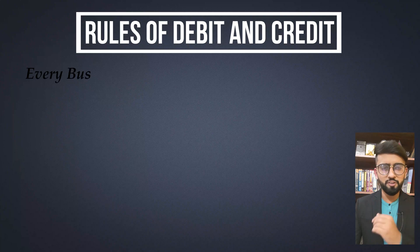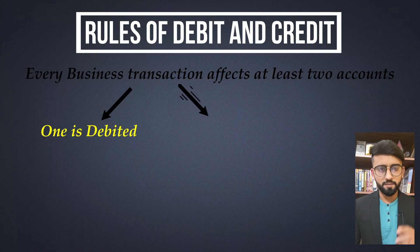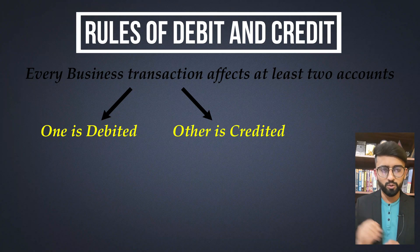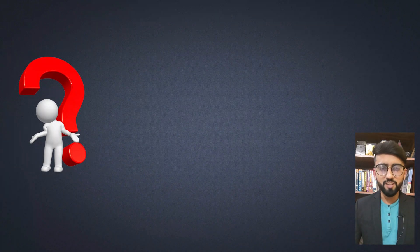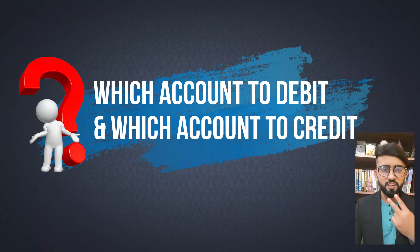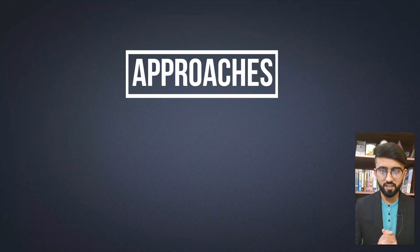As you know, every business transaction affects at least two accounts. One of them is debited and the other one is credited. There can be transactions where more than one account is debited or credited, but the amount to be debited will always be equal to the amount to be credited. There are two approaches for deciding when to write on the debit side and when to write on the credit side of the account.